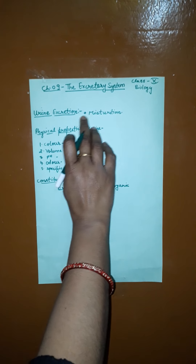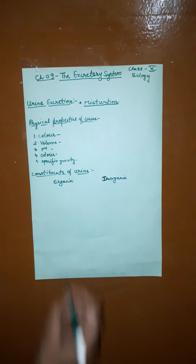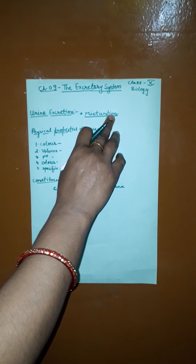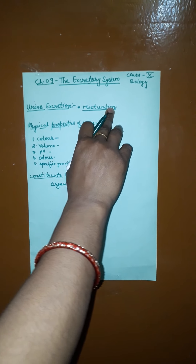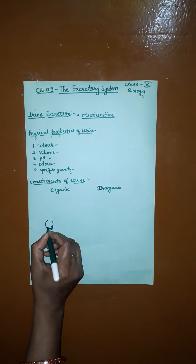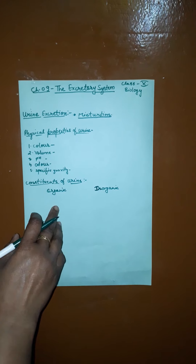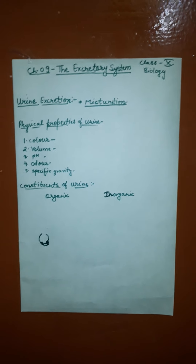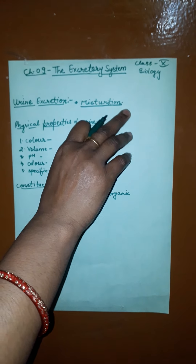One important term is micturition — it is a one-mark question in board examinations. Micturition is the process of expulsion of urine from the body, and it is under the control of the nervous system. Urine is expelled from the urinary bladder through the urethra — in males through the penis, and in females directly — by relaxation of the sphincter muscles. These sphincter muscles are located at the opening of the urinary bladder into the urethra, and the process occurs under nerve impulse from the nervous system.